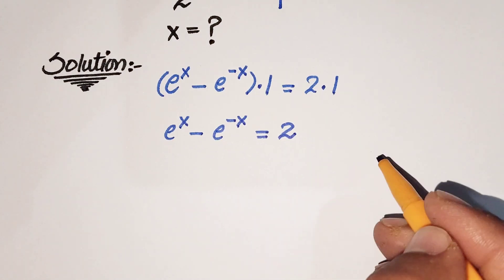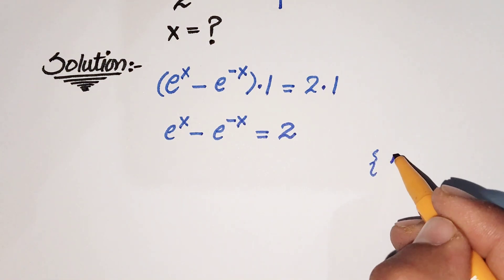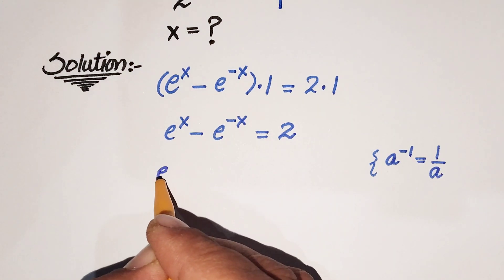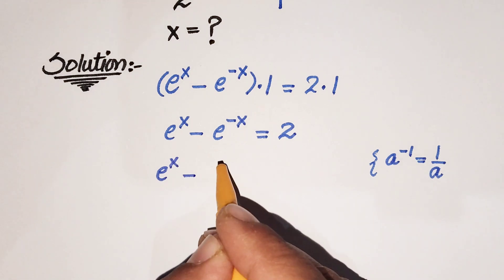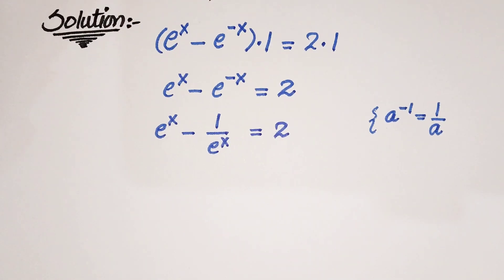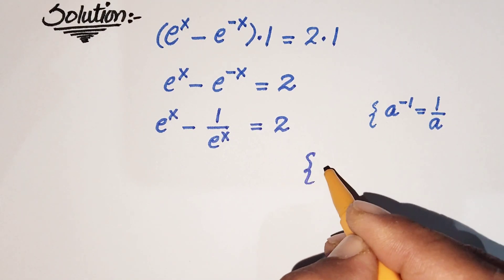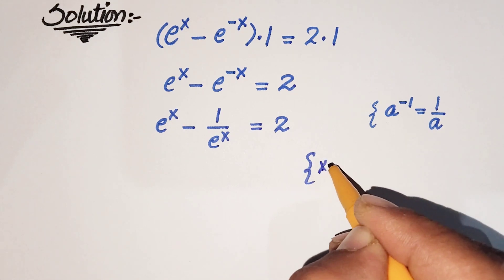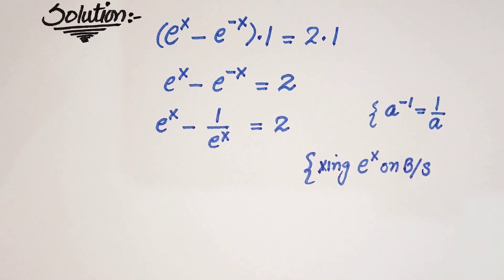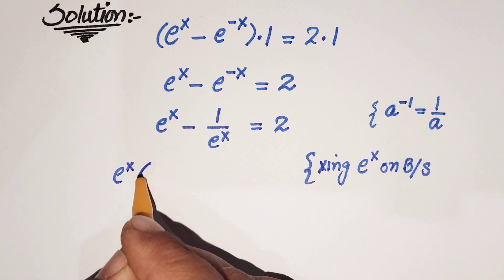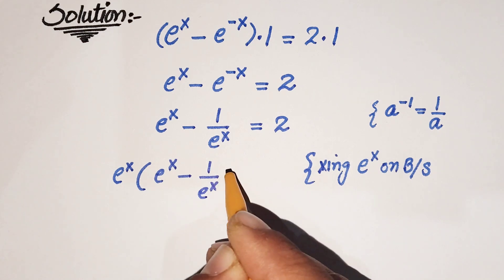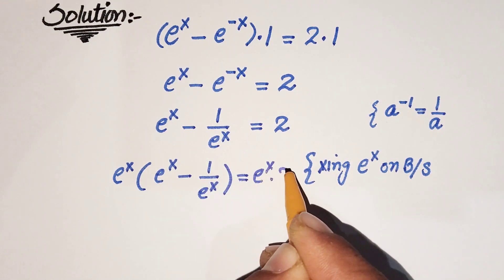As we know by exponential identity, if we have a raised to power minus 1, we can write it as 1 over a. So here e raised to power minus x can be written as 1 over e raised to power x, which is equal to 2. Now we are going to multiply e raised to power x on both sides.